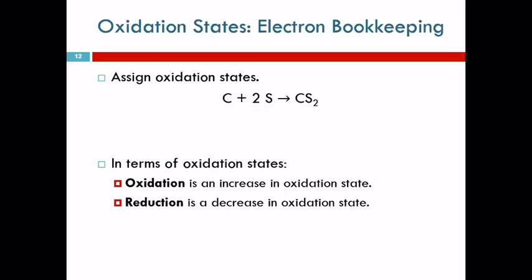By assigning oxidation states to the elements in a chemical equation, we can figure out what's being oxidized and what's being reduced. Oxidation happens when you have an increase in the oxidation state. Reduction is a decrease or a reduction in the oxidation state. Oxidation number goes up or it goes down.